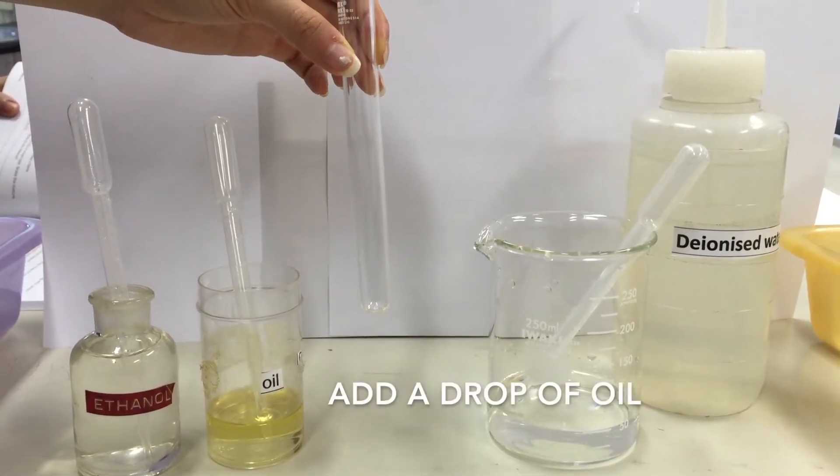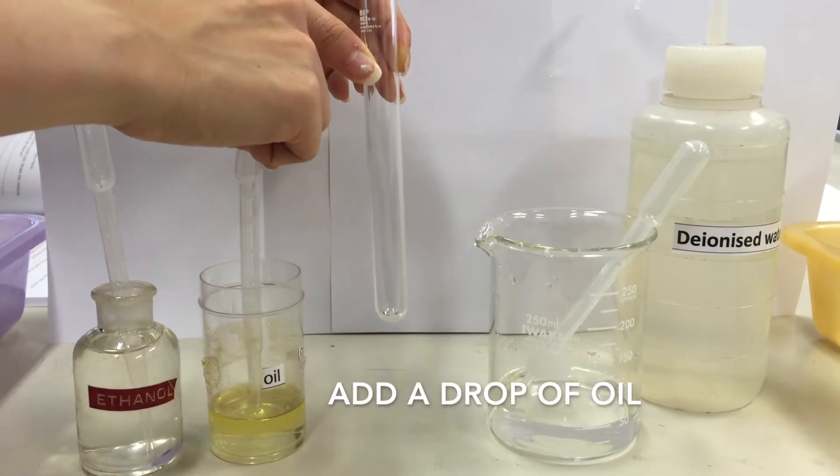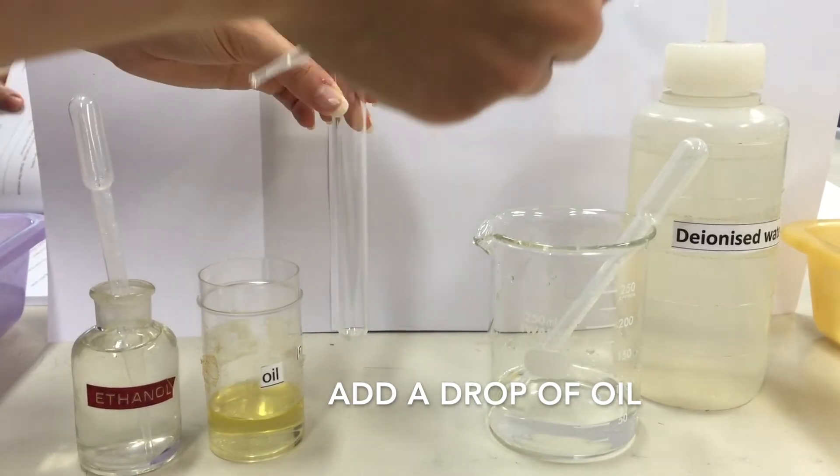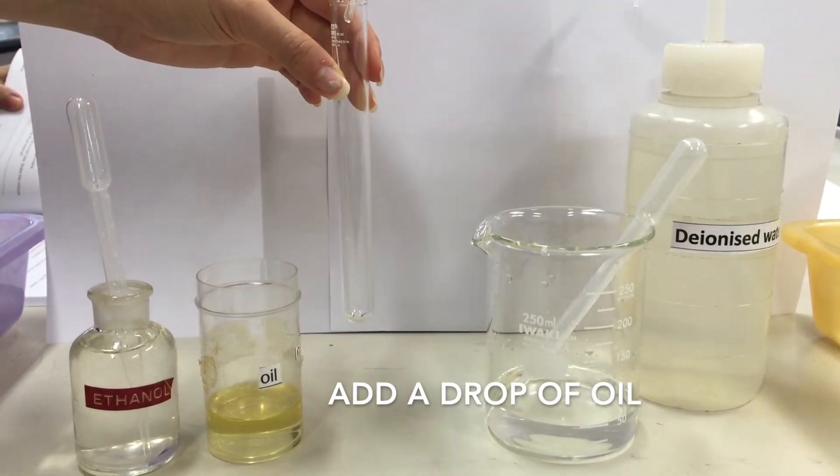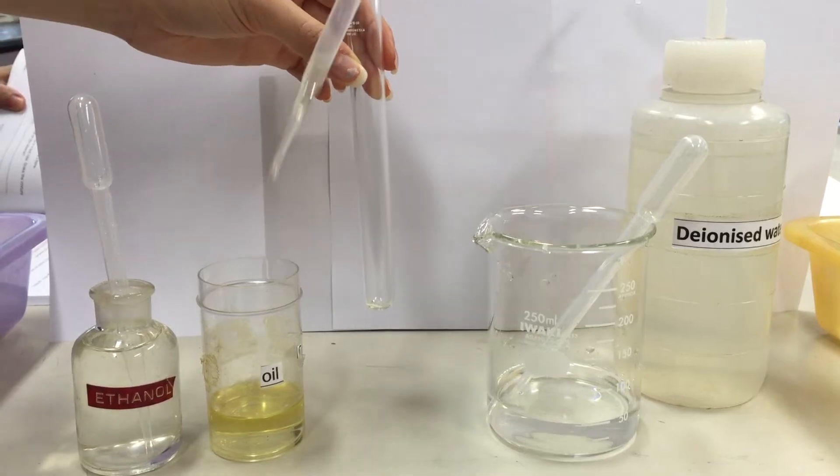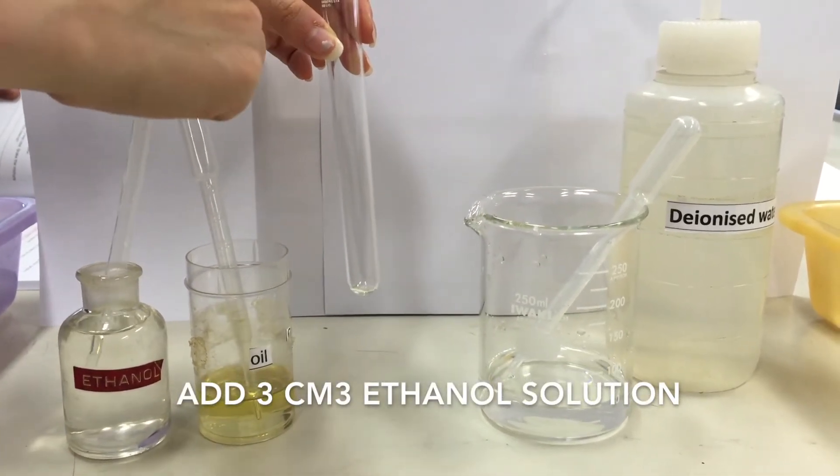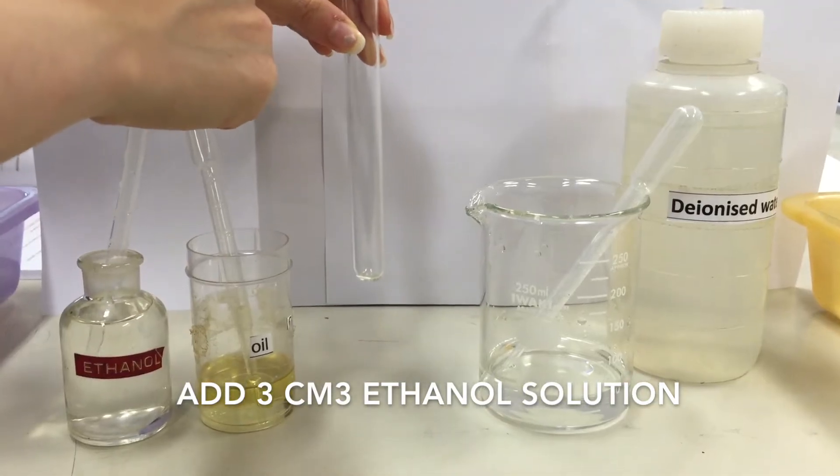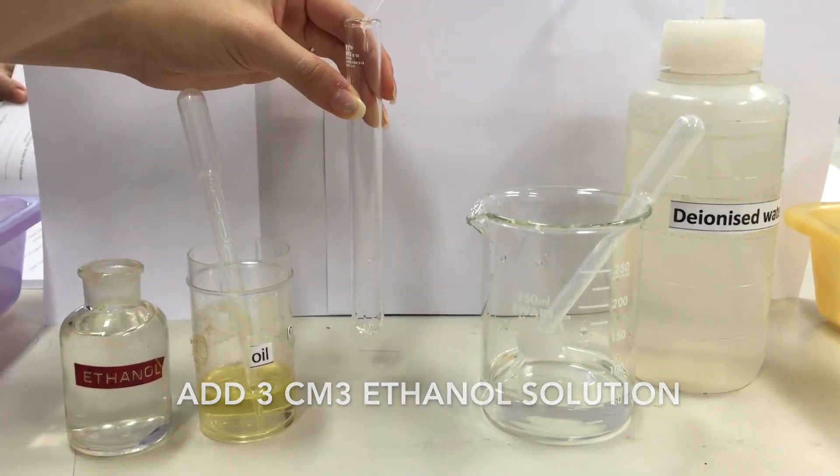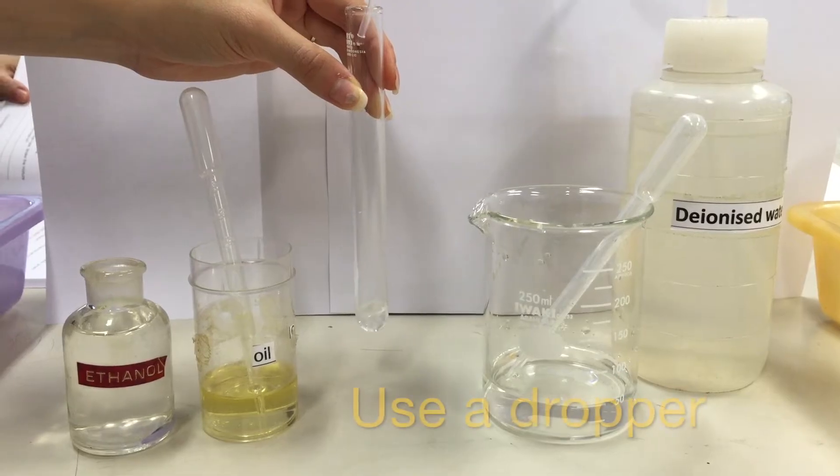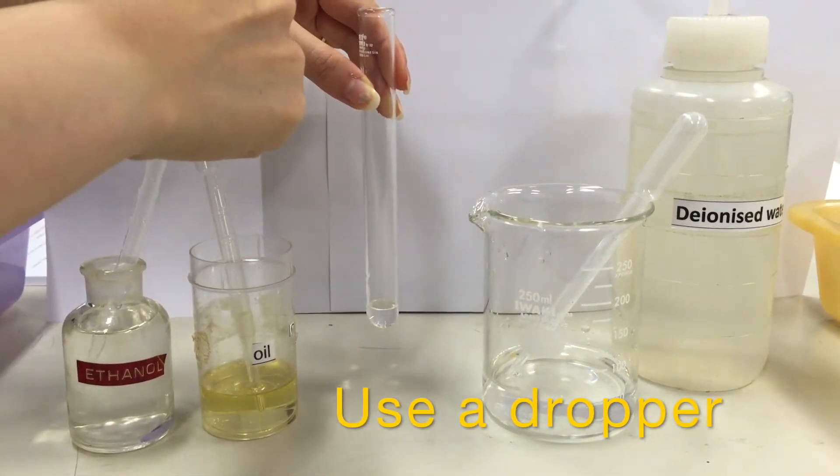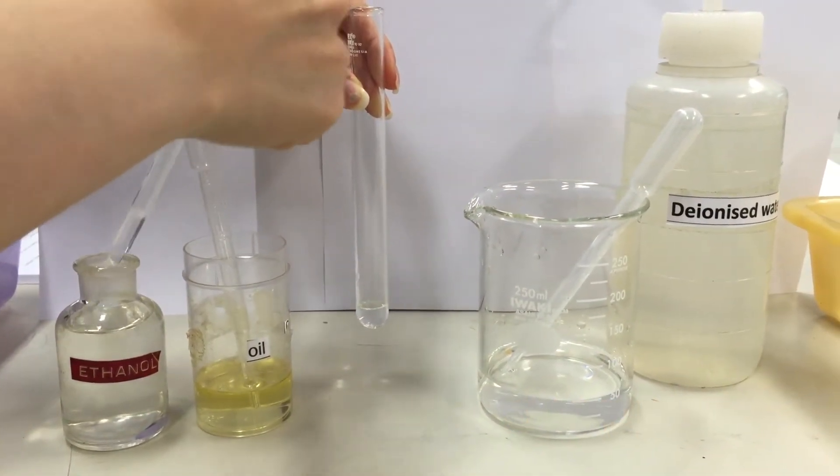We add a small drop of oil in a test tube. Next, we add 3 cm³ of alcohol to the oil in the test tube. We use a dropper to measure exactly 3 cm³ of alcohol.